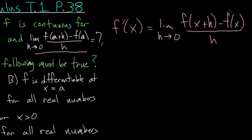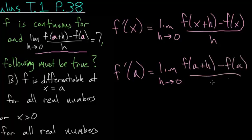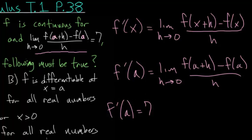So if we make that substitution — replacing x with a — then we essentially have the derivative evaluated at a equal to the limit as h approaches 0 of f of a plus h minus f of a, all divided by h. So this equation means that the derivative evaluated at a is equal to 7. We can use this information to answer the questions.